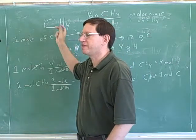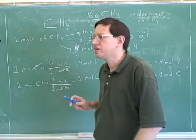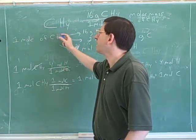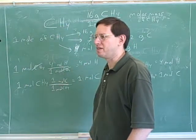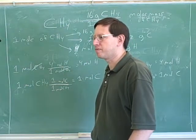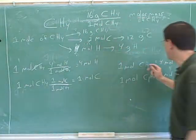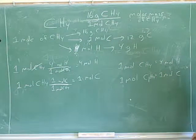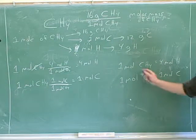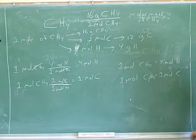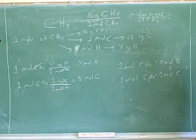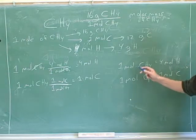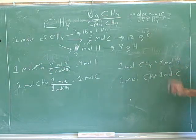This is called the molecular formula for methane. What we're seeing is that molecular formulas have conversion ratios inside of them — molecular formulas give you conversion ratios. You can convert between moles of the molecule and moles of the atom. That's the kind of conversion ratio you get.